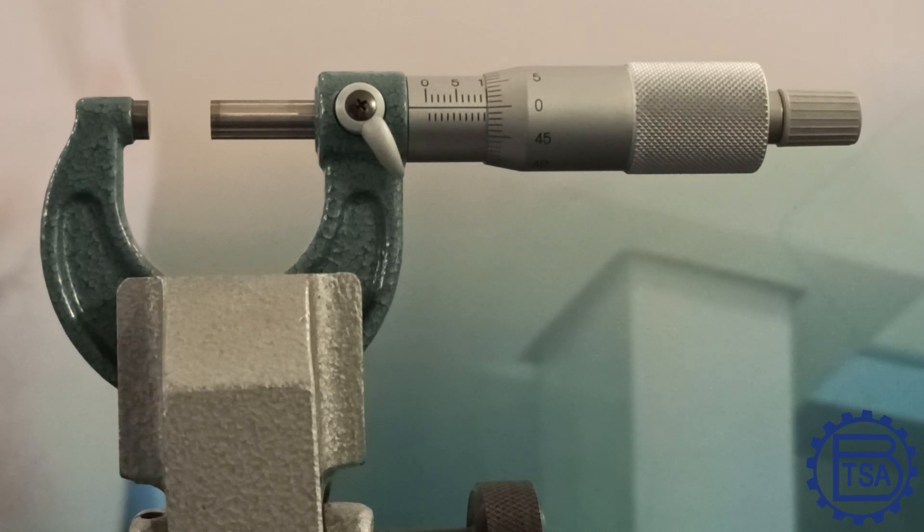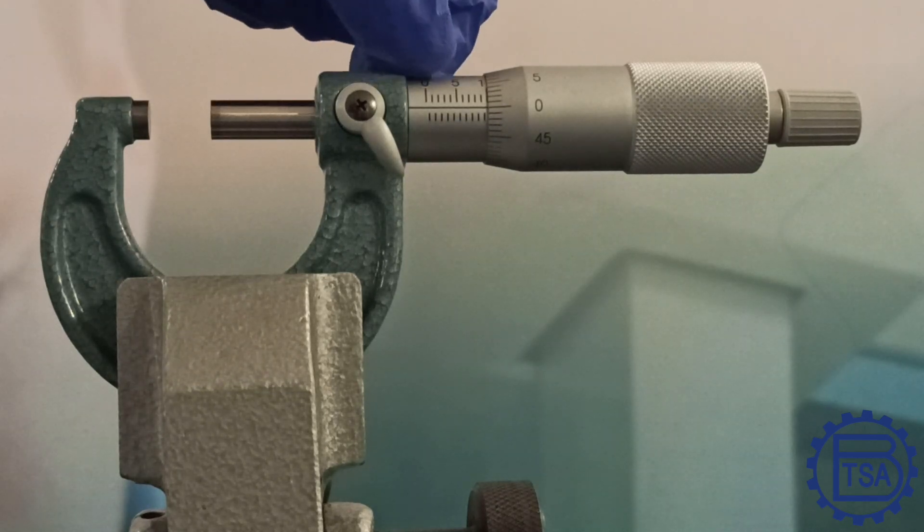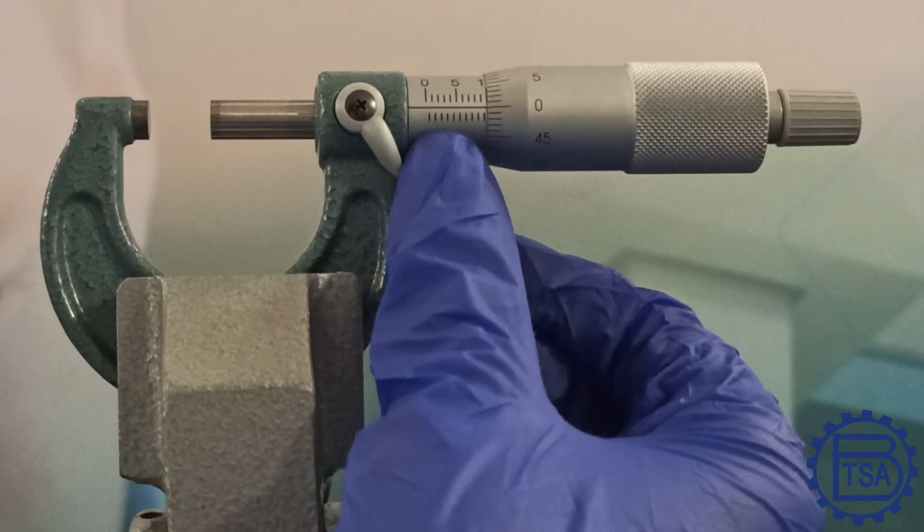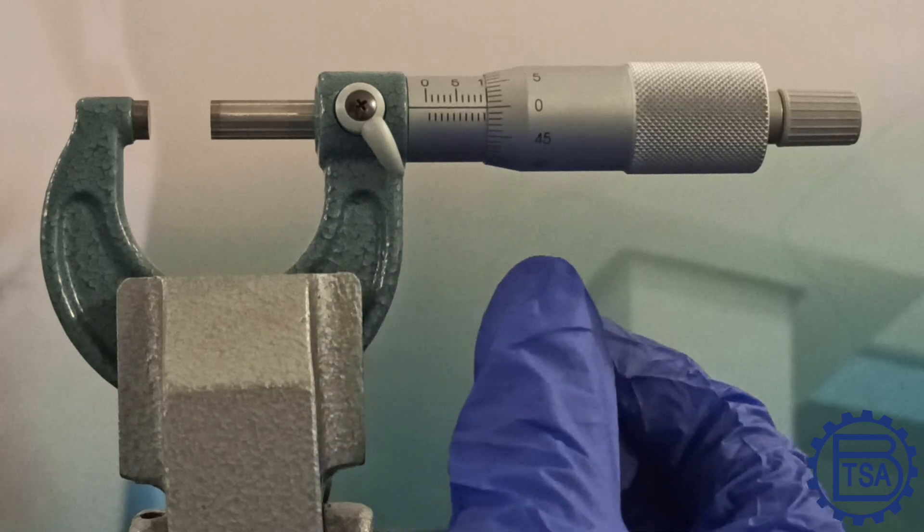As you can see, there are two sets of markings on the sleeve. The markings above the line indicate 1 mm and the markings below indicate 0.5 mm. We must observe which line our thimble has crossed.